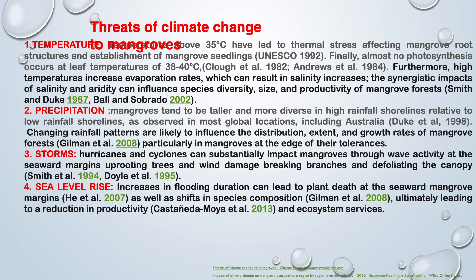Precipitation: Mangroves tend to be taller and more diverse in high-rainfall shorelines compared to low-rainfall shorelines, as observed in most global locations including Australia. Changing rainfall patterns are likely to influence the distribution, extent, and growth rate of mangrove forests, particularly in mangroves at the edge of their tolerance. Storms: Hurricanes and cyclones can substantially impact mangroves through wave activity at the seaward margin, uprooting trees, wind damage, breaking branches, and defoliating the canopy. Sea level rise: Increases in flooding duration can lead to plant death at the seaward mangrove margins, as well as shifts in species composition, ultimately leading to a reduction in productivity and ecosystem services.